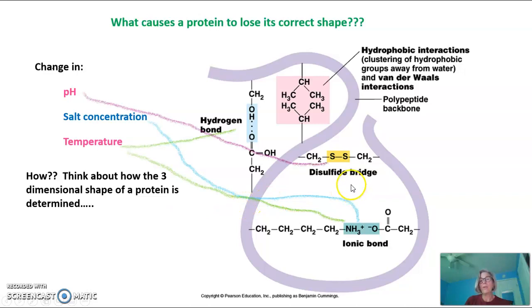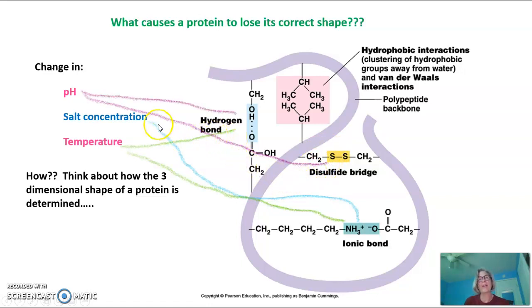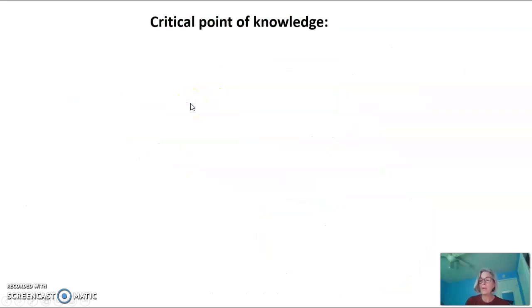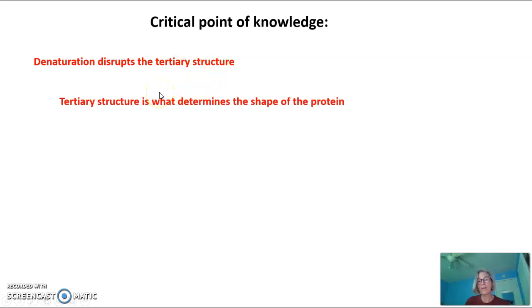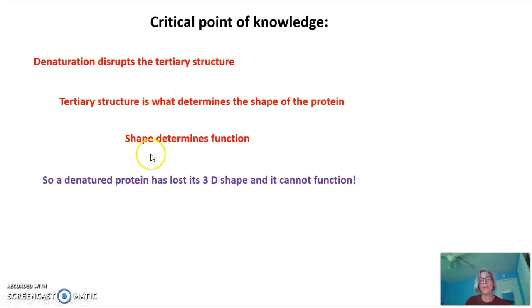If you change the pH, that's going to very specifically disrupt disulfide bridges. An increase or decrease in hydrogen concentration is going to make these easier or harder to form, because the sulfur groups could go back to forming a sulfhydryl group of the individual R groups. A change in pH could also disrupt hydrogen bonds by changing hydrogen concentrations. A critical point is that denaturation disrupts the tertiary structure — it doesn't change the primary or secondary structure. It disrupts the tertiary structure, which is what determines the shape of the protein. Because shape determines function, if a denatured protein loses its three-dimensional shape, it loses its function.